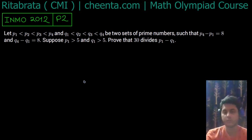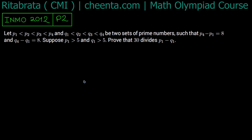So let's begin. Firstly, as we are given that both are greater than 5, so both are odd primes.